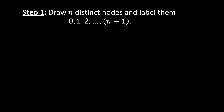So this is the algorithm. The first step is to draw n distinct nodes — you can call them points — and label them from 0 through n minus 1. For example, if n equals 4, you label them 0, 1, 2, and 3. Similarly for 5, 6, and any other natural number.